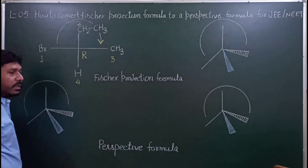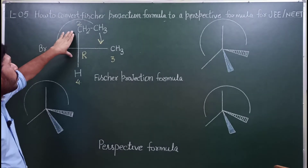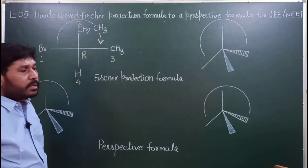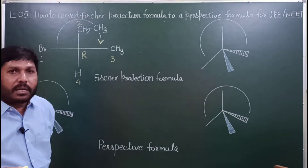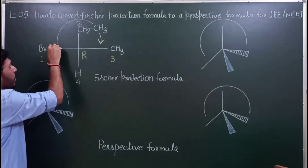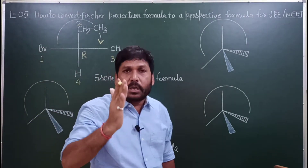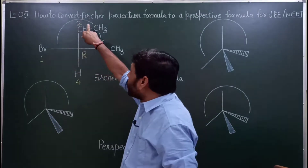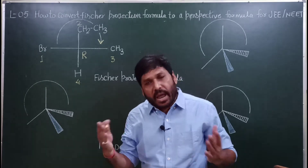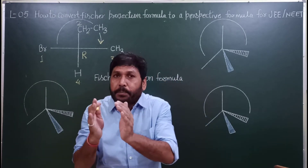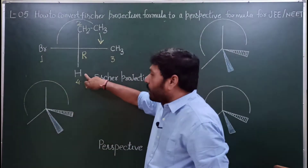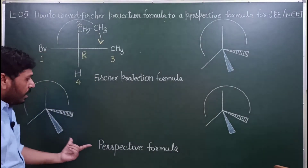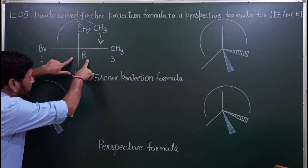Clockwise direction है और clockwise direction में rotation जब होता है तो इससे R configuration बोला जाता है। जब यह R है — जो सबसे lowest priority order वाला H है, अगर यह vertical bond पर है तो rotation में हम कोई भी change नहीं करेंगे, जो real rotation है वो ही रहेगा। लेकिन अगर H horizontal bond पर होता तो उस rotation को हम opposite मानते और configuration S होता। यहाँ vertical bond है तो answer R आया।